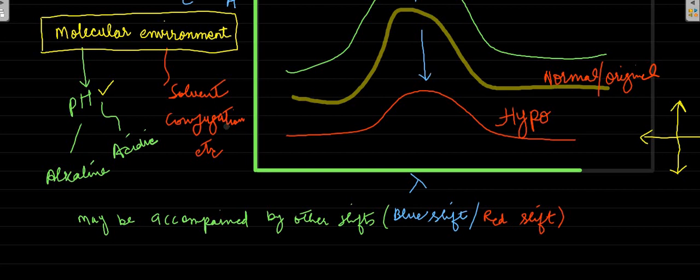Normally, these hyper and hypochromic shifts are accompanied by other shifts like blue shift or red shift of the UV-visible spectrum.